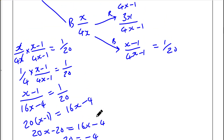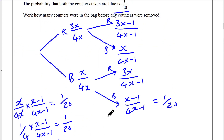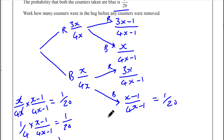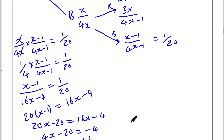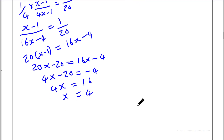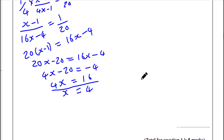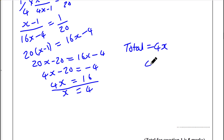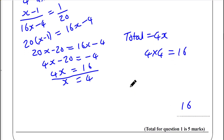The question asks us to work out how many counters were in the bag before any were removed. We know the total equals 4x, and since x equals 4, that's 4 times 4 equals 16. That is the answer. Let's try another one.